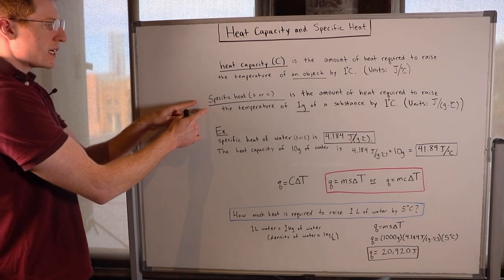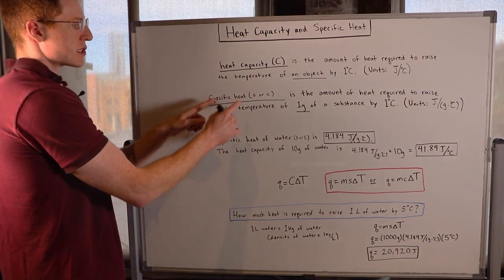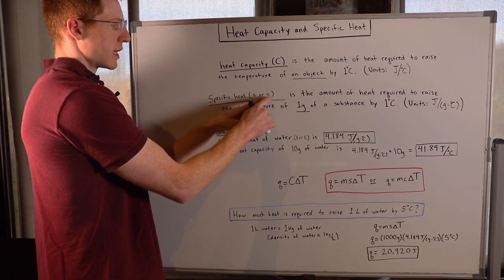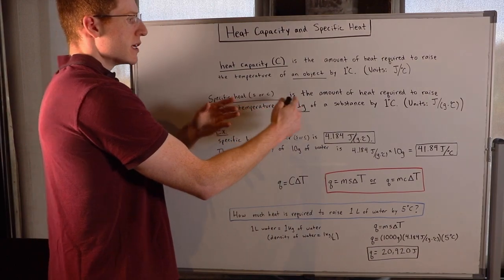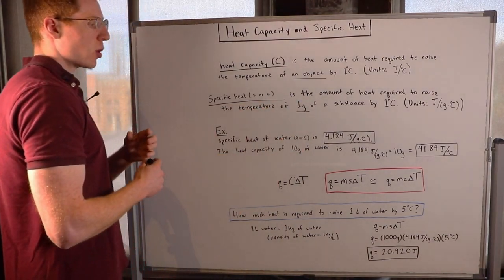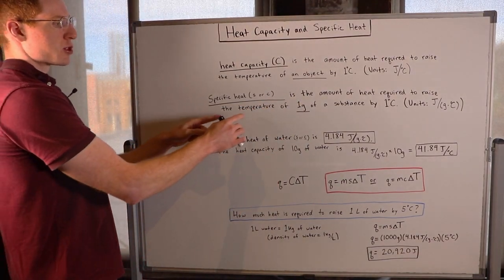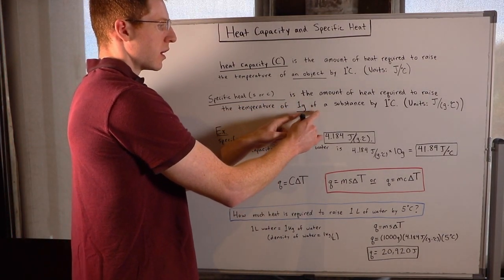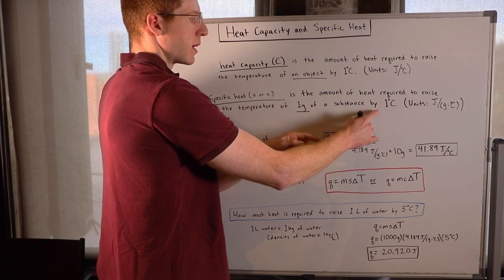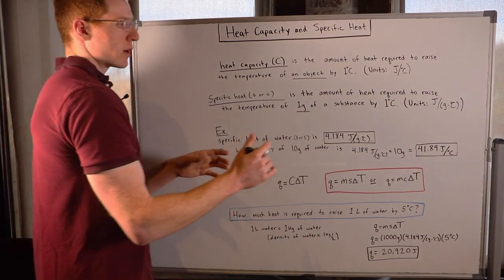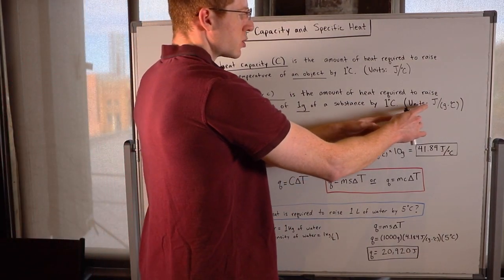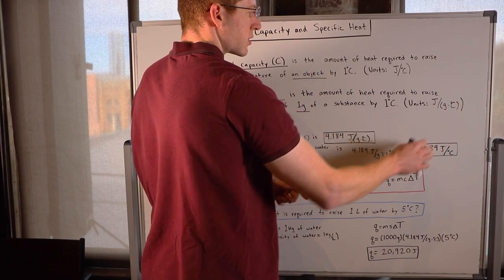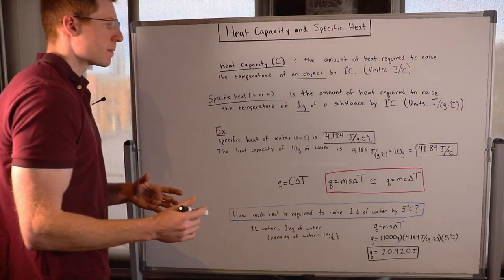Specific heat, on the other hand, denoted with a lowercase s or a lowercase c, is the amount of heat required to raise the temperature of one gram of a substance by one degree Celsius. Accordingly, its units are joules per grams times degrees Celsius.